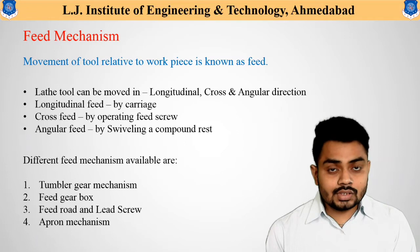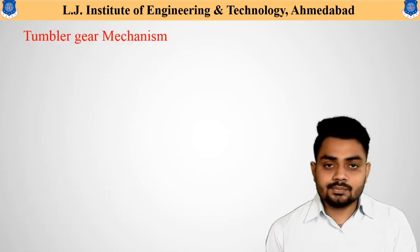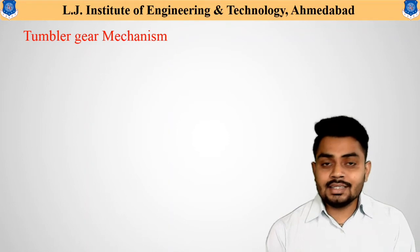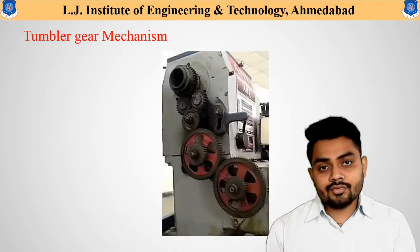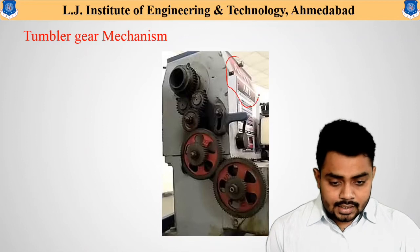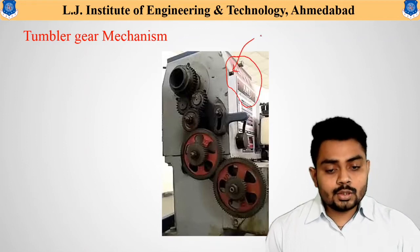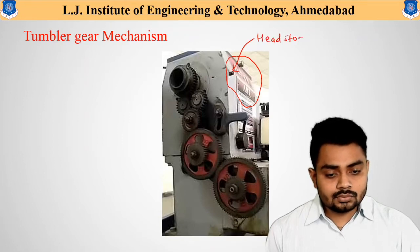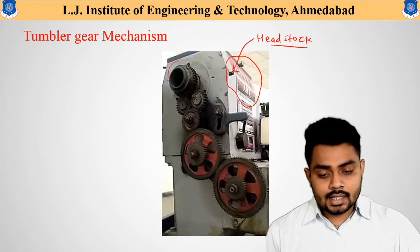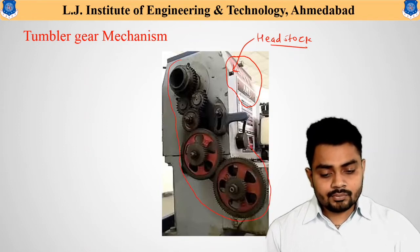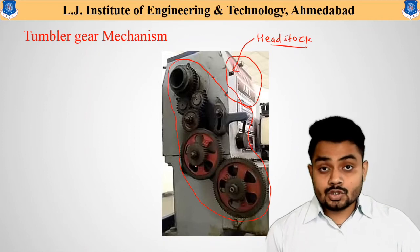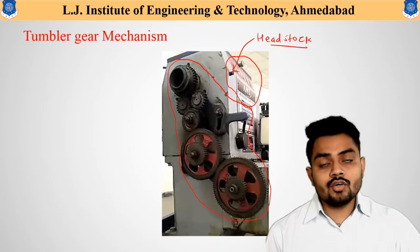Now let us understand the first one — the tumbler gear mechanism. What is the tumbler gear mechanism and where is it available in the lathe machine? Have a look at this particular figure. This entire section shown here is the headstock, and at the back end of the headstock this entire gear assembly is available — that is the tumbler gear mechanism.